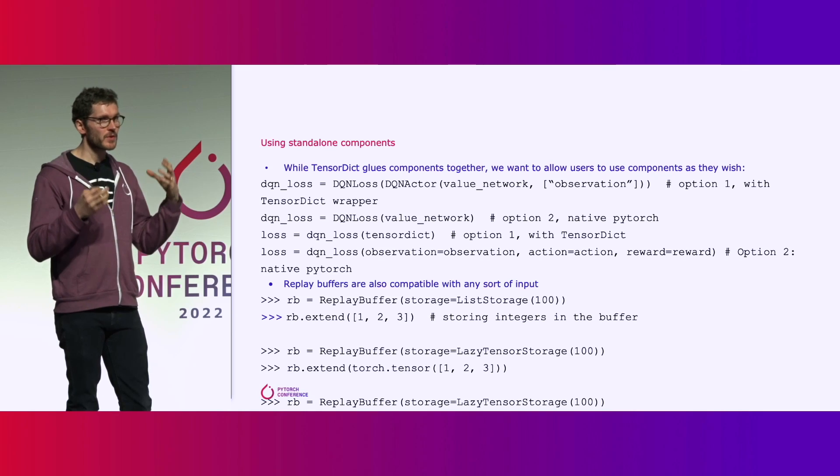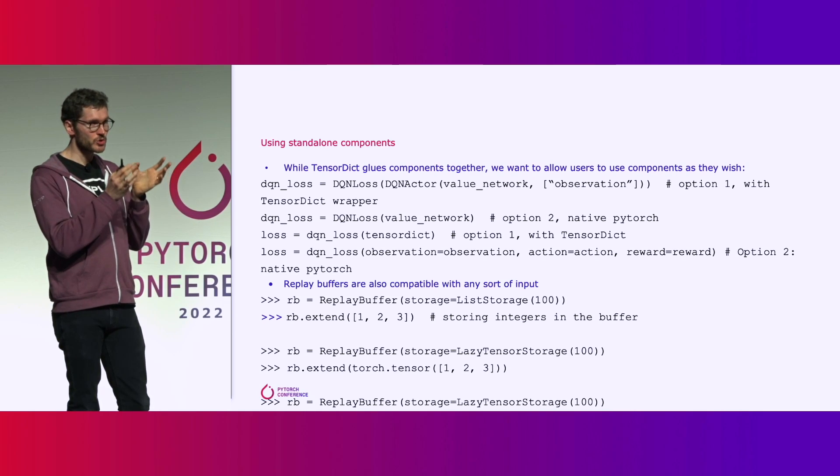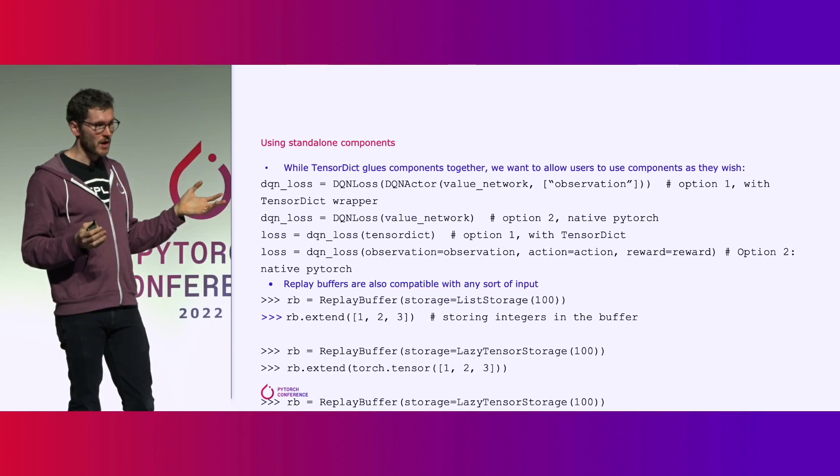TensorDict was originally part of TorchRL, but early users pointed out that they'd prefer it as an independent library, since they wanted to use it in other projects like self-supervised learning. So we open-sourced TensorDict as a separate library under PyTorch Labs. The second component of modularity is that you should be able to use just one module from TorchRL without needing the whole stack of components.